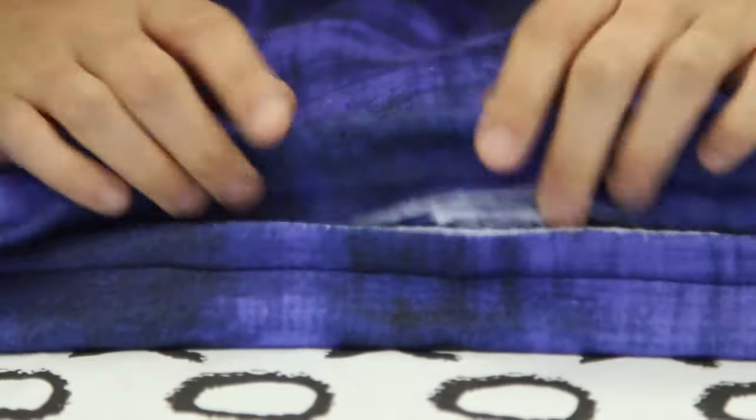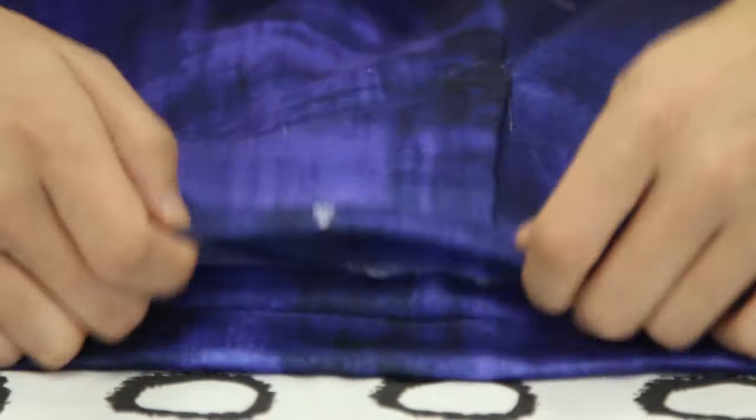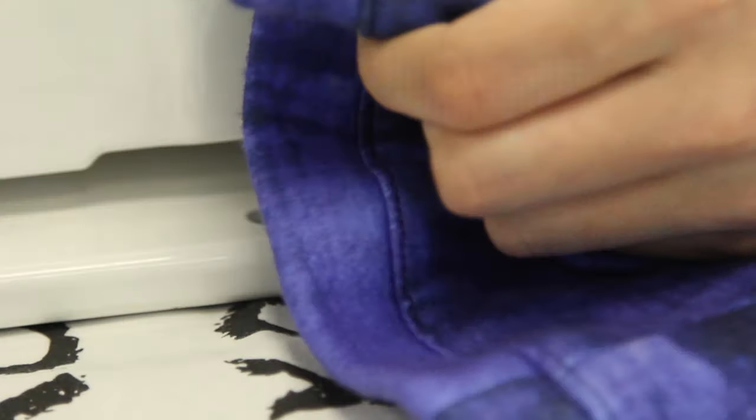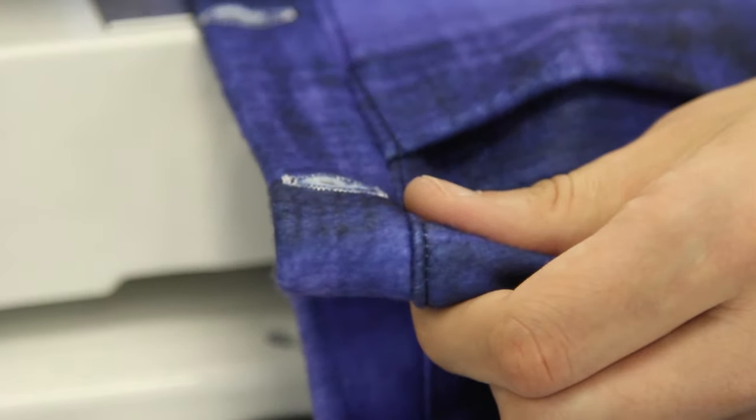Now, turn your waistband up, press flat, and topstitch your seam allowance from the waistband to your pants.